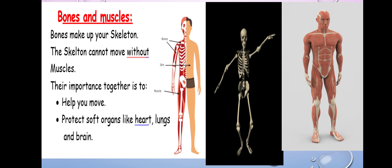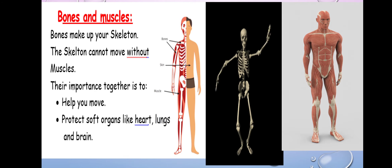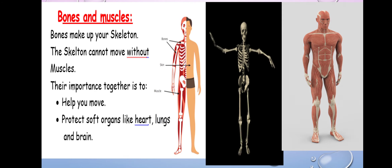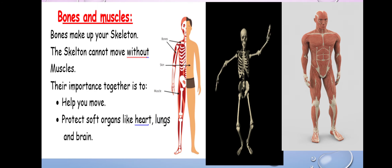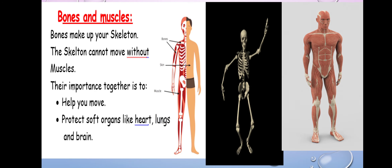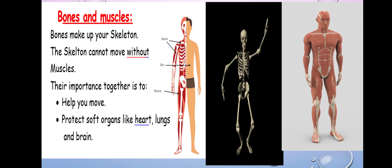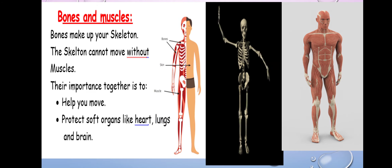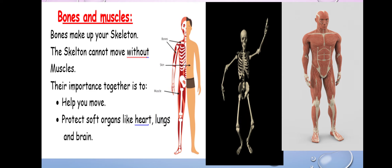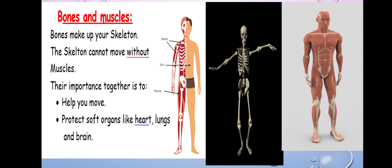Bones and muscles. Bones make up your skeleton — bones of your finger, hand, arm, chest, and leg all together form the skeleton. A skeleton can't move without muscle, so we move by skeleton and muscle together. We have to have muscle and bone so we can move. They help us to move.